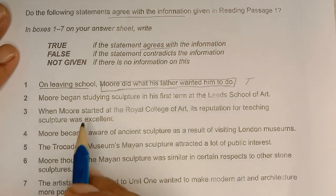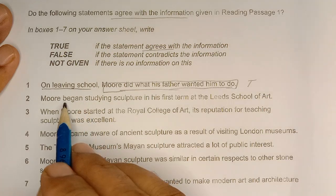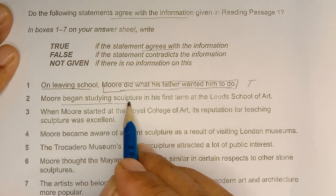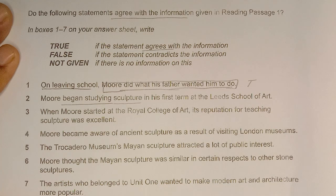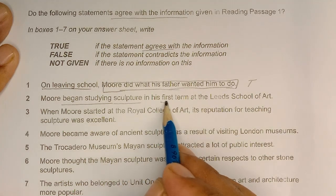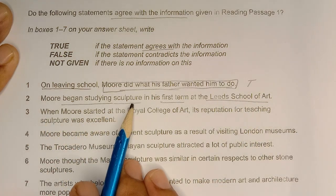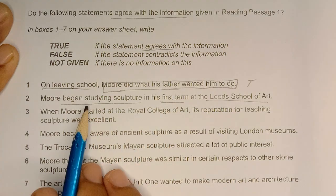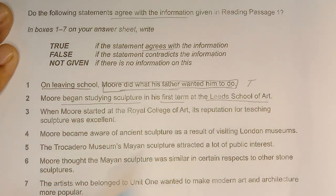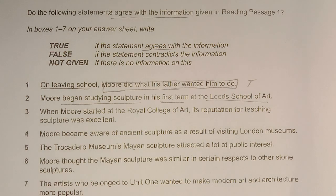Second statement: 'Moore began studying sculpture in his first term at Leeds School of Art.' Underline the clue words. Moore نے جو مجسمہ سازی تھی وہ پہلی term میں پڑھنا شروع کی Leeds School of Art میں — he started studying sculpture in his first term. Let's see whether it matches, contradicts, or is not given.